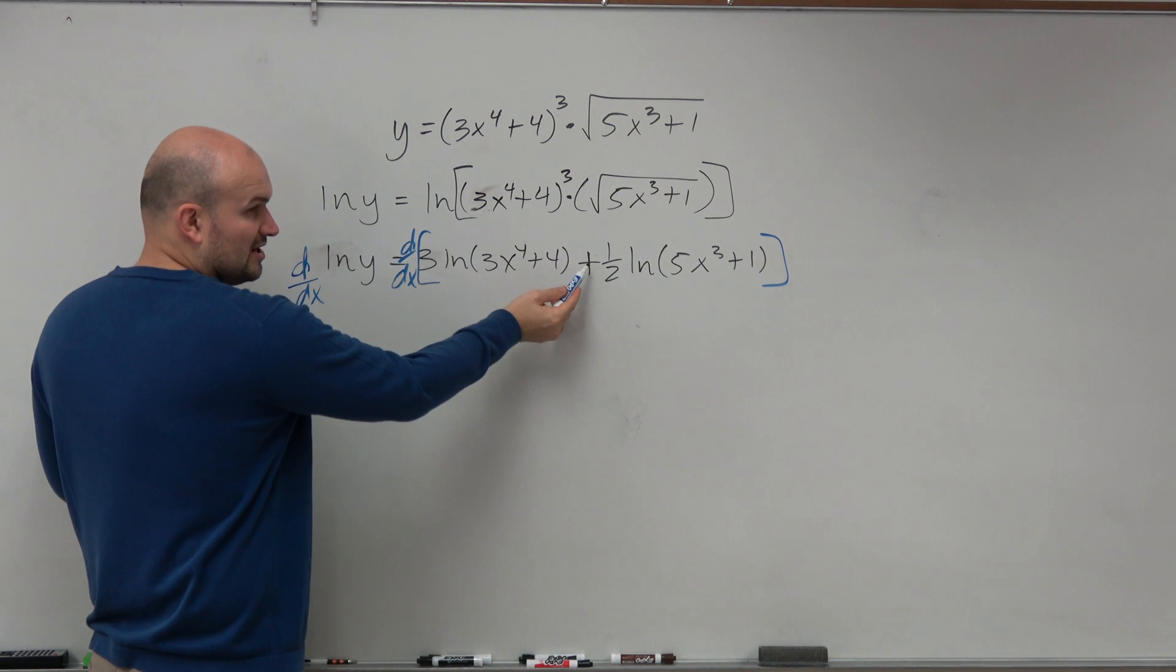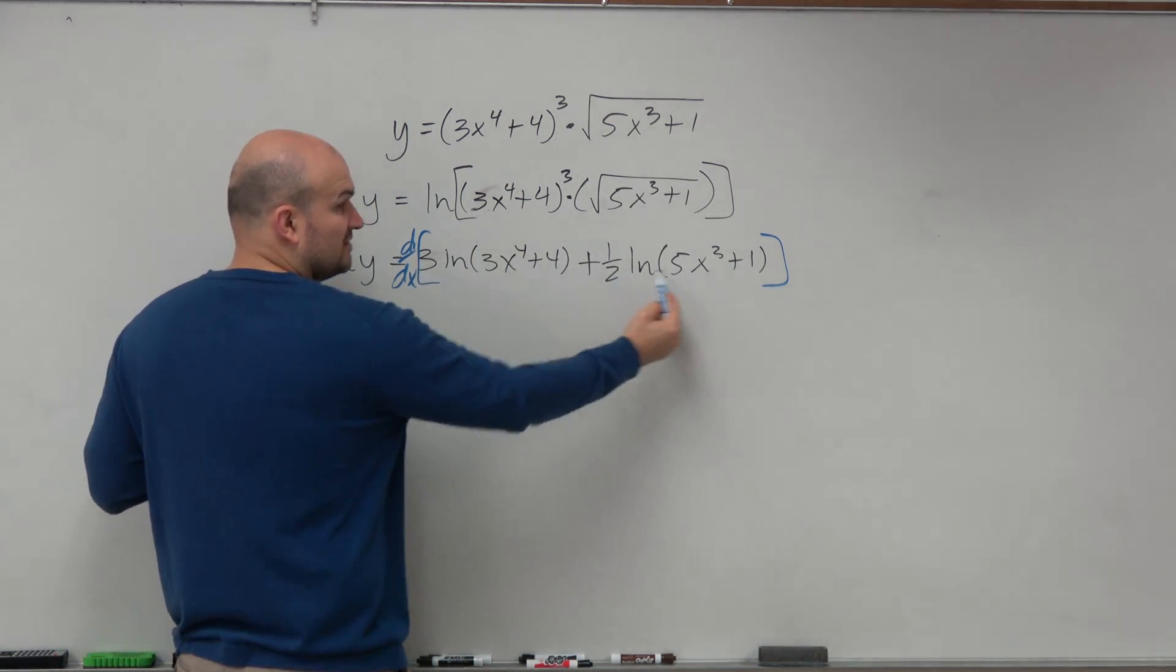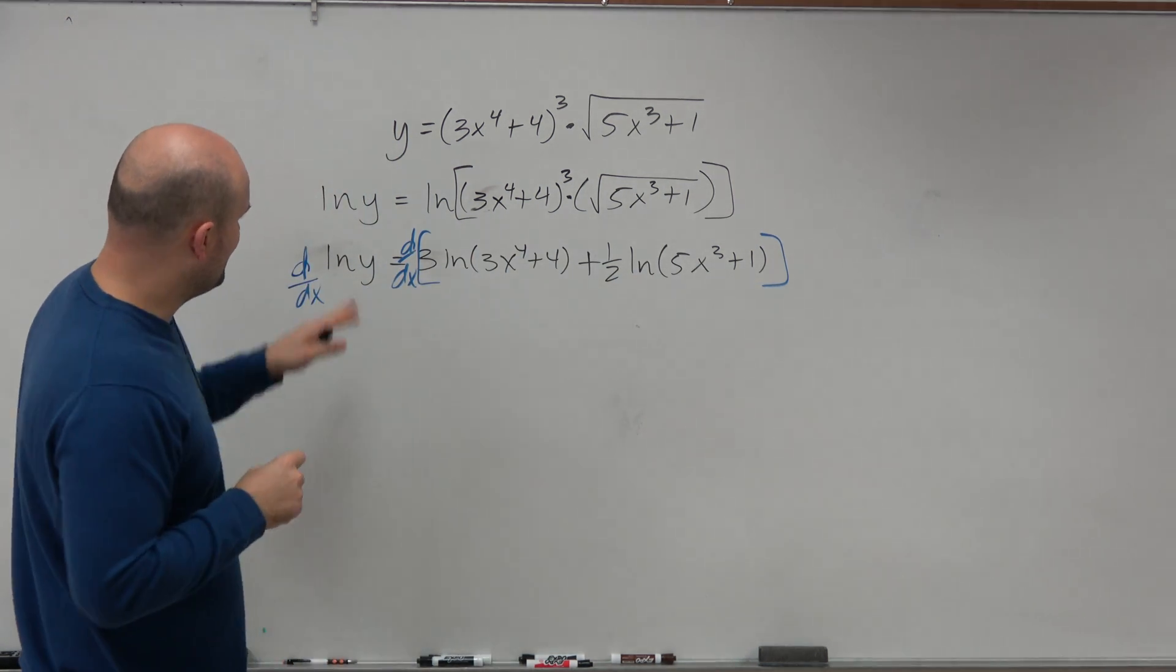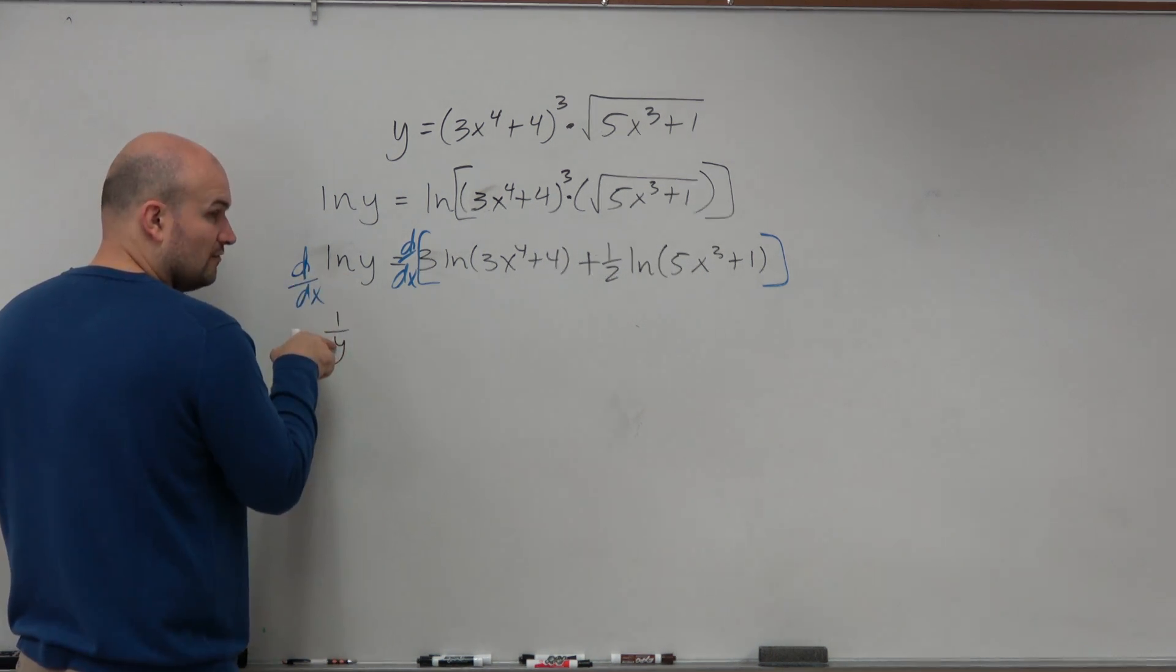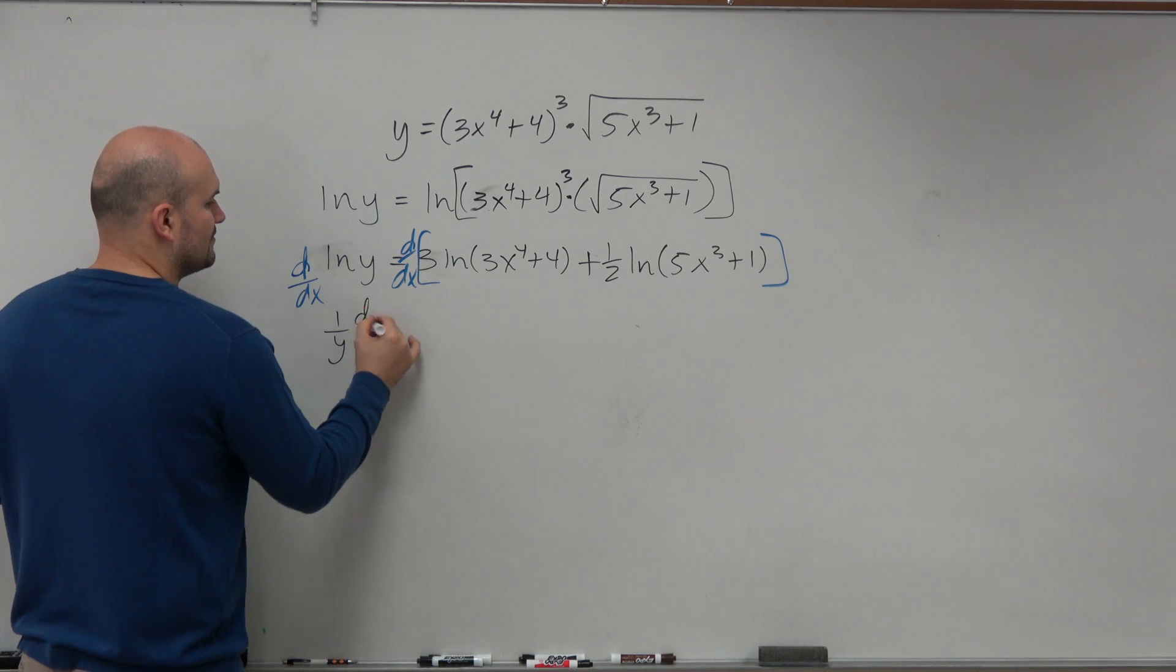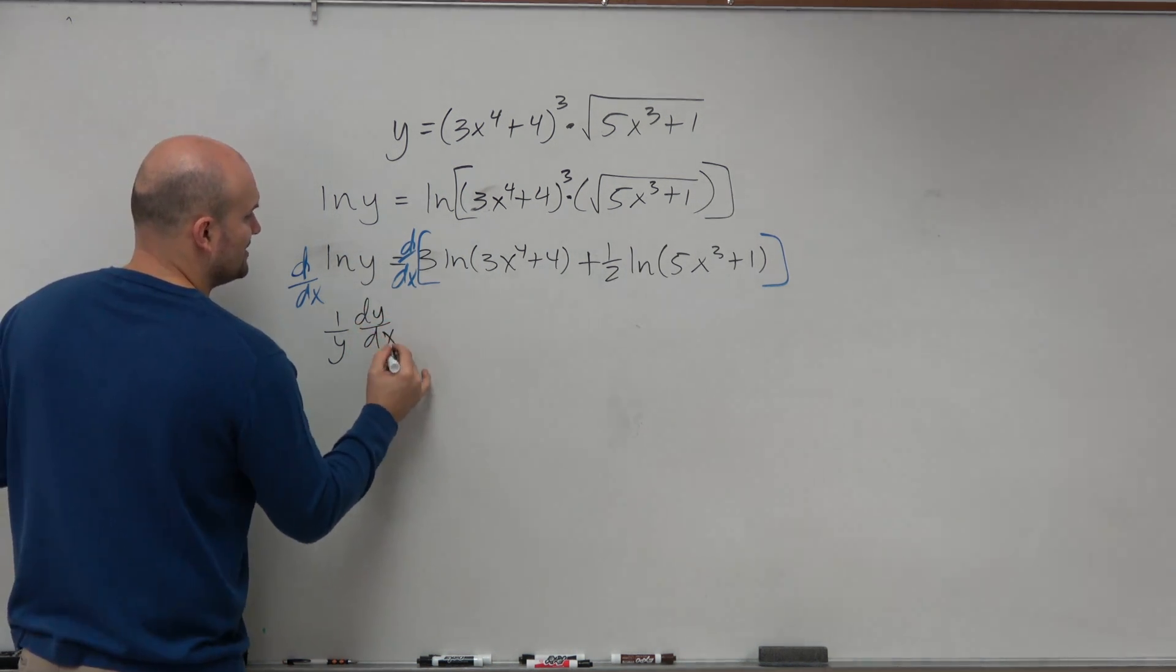So since this is separated by addition, we're basically taking the derivative of each of those separately. When we have ln of y with respect to x, that's going to be 1 over y. And then you have to take the derivative of y, so chain rule is going to be dy dx.